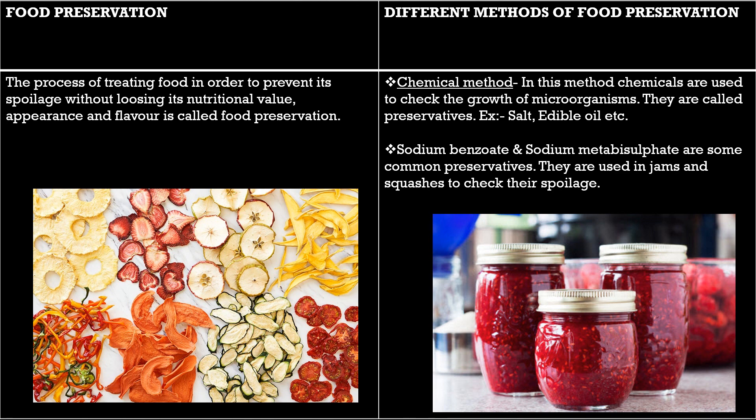Sodium metabisulphate and sodium benzoate are used to preserve foods such as jam, jelly, juices and squashes so as to save them from spoilage. Citric acid is used as a preservative in sweets. These are special chemicals that kill the food-spoiling bacteria but do not harm us.